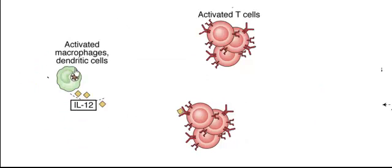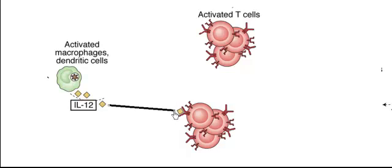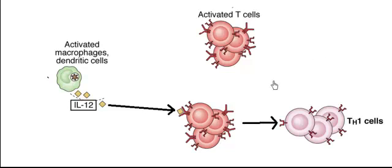Other antigen presenting cells such as macrophages and dendritic cells will produce interleukin 12, another cytokine. This cytokine will also go and bind to the surface receptor of the activated T cells and further convert them to T helper 1 cells.